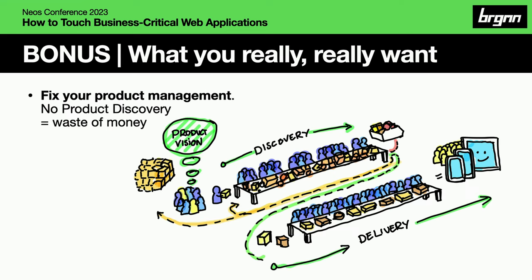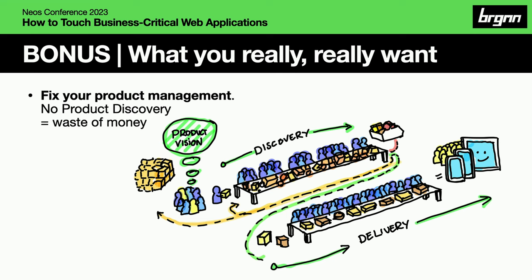I have a bonus learning: product management. You can see two lines — most companies just have the delivery line, and that's the first thing I ask my customers: do you have real product management? Most say yes, but after more questions it turns out they're just doing project management — they write issues, implement them, and if they don't work, they just build another feature. You can save a lot of money if you do the product discovery thing right and have a dedicated product manager who thinks about features before implementing them. I set up product management at T3N, hired the first product manager, and it was a real game changer.